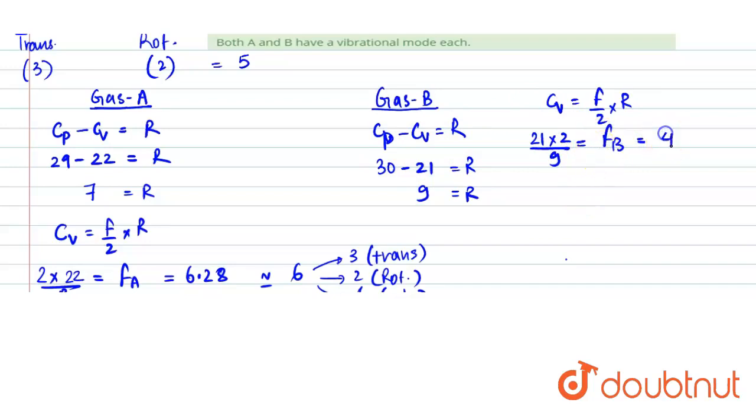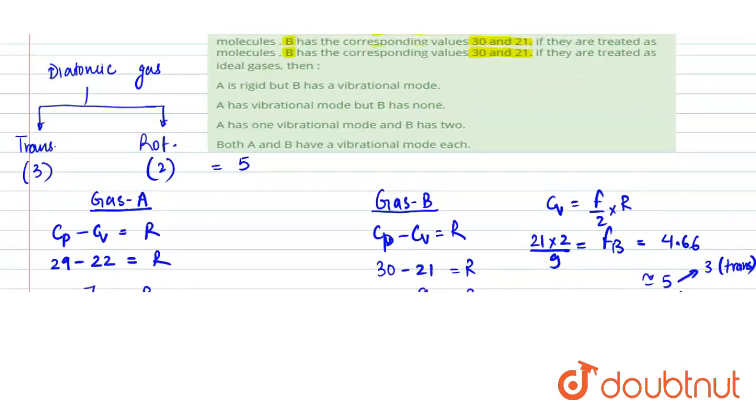Which is 4.66. This can be approximated to 5. Now we can see these 5 degrees of freedom will be from 3 are from translational and 2 are from rotational. So, there is no vibrational degree of freedom.